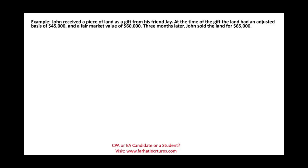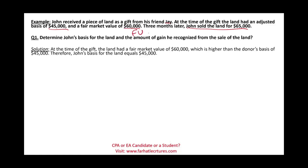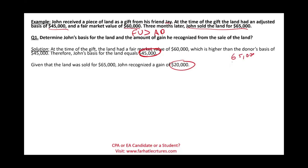Let's work a simple example. John received a piece of land as a gift from his friend Jay. At the time of the gift, the land had an adjusted basis of $45,000 and a fair market value of $60,000. Three months later, John sold the land for $65,000. Since the fair market value was greater than the adjusted basis, John's basis is the same as Jay's — $45,000. Selling at $65,000 with a basis of $45,000 gives John a recognized gain of $20,000.